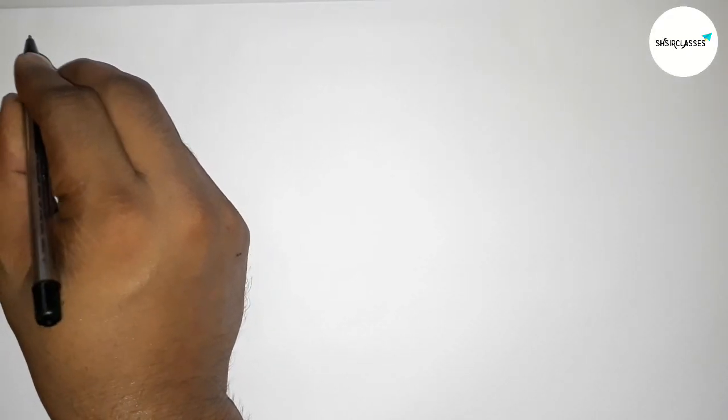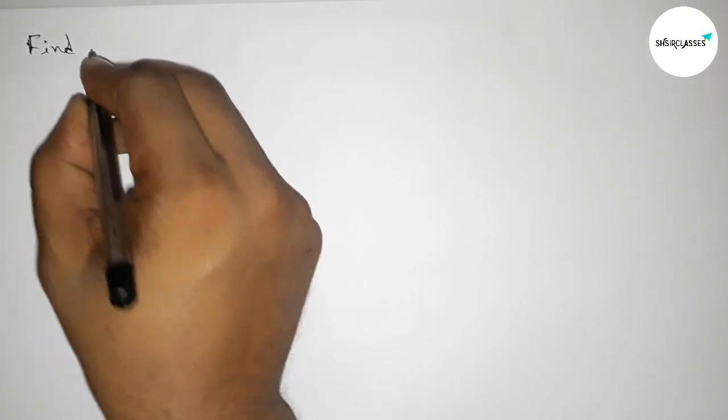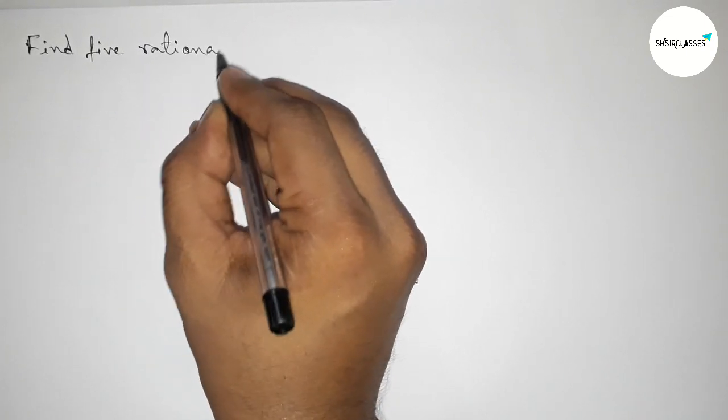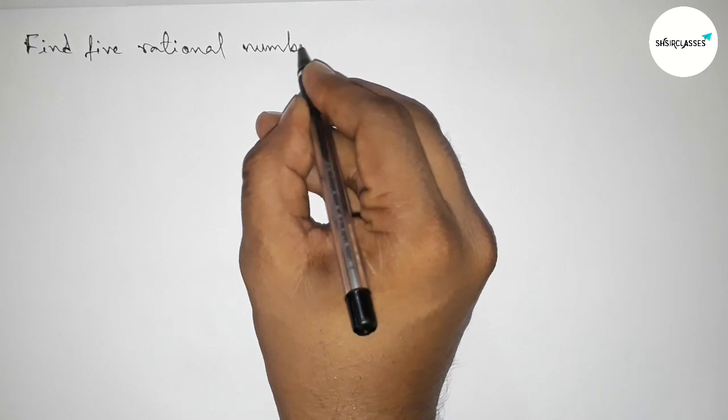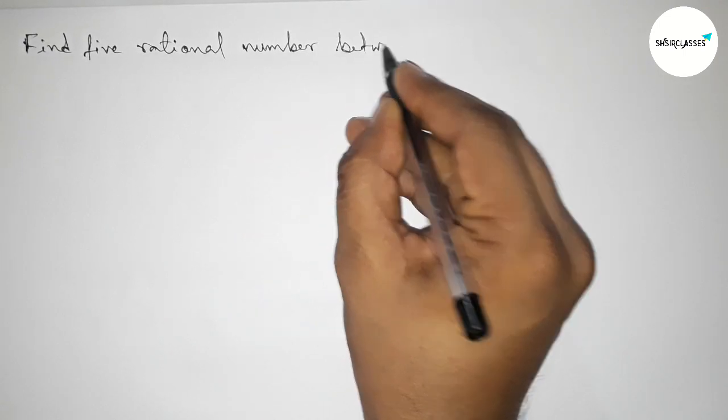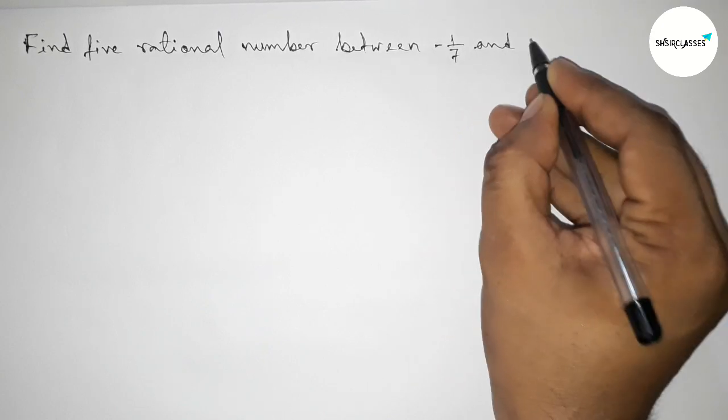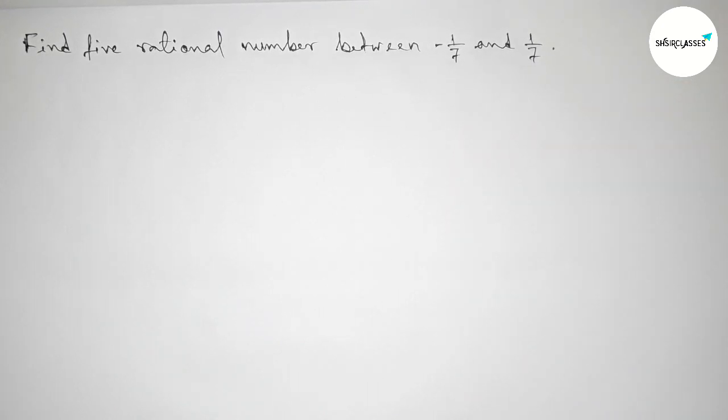Hi everyone, welcome to SI share classes. Today in this video we have to find 5 rational numbers between -1/7 and 1/7 in an easy way. So please watch the video till the end. Let's start the video.